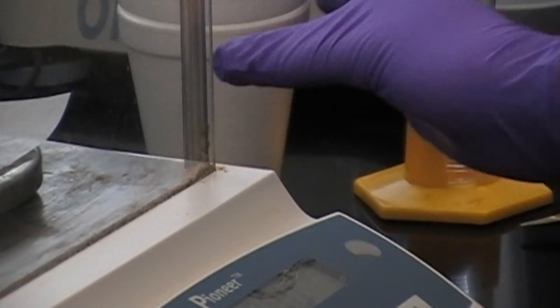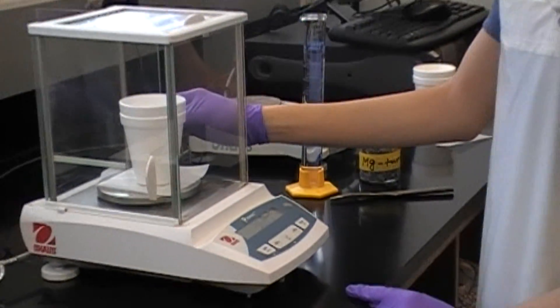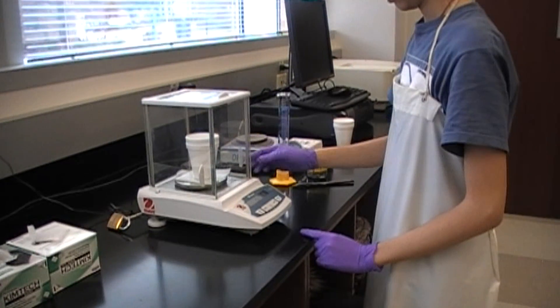To determine the heat of reaction, accurately weigh the dry calorimeter, and add the 50 milliliters of hydrochloric acid to the cup.